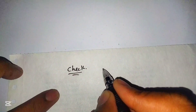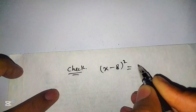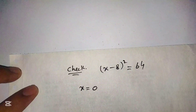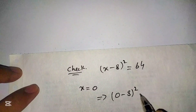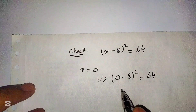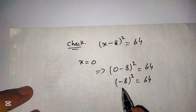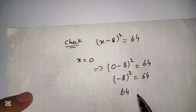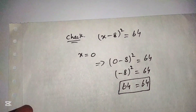To check the correctness of our solution, we write the given equation: (x - 8)² = 64. First, we put x = 0: (0 - 8)² = 64, so (-8)² = 64. The negative sign inside the square becomes positive, giving 64 = 64, which verifies our first solution x = 0.